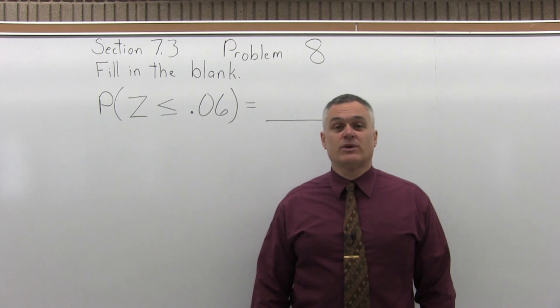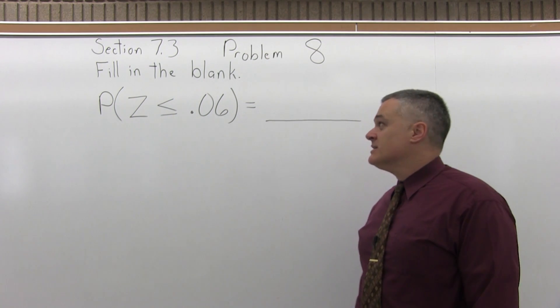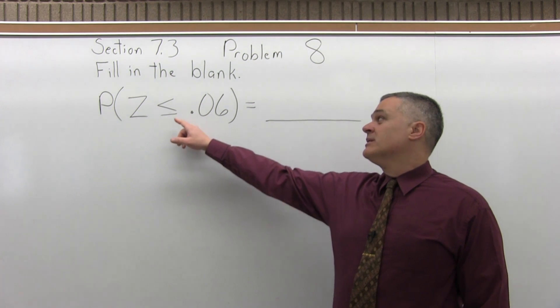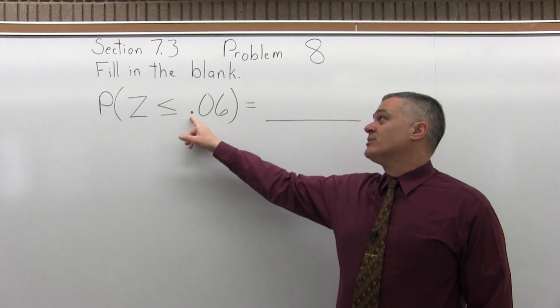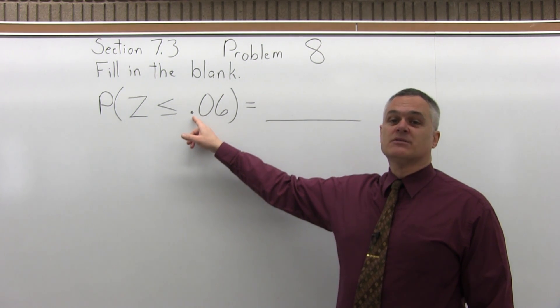This is Section 7.3, Problem 8. It says fill in the blank, find the probability that Z is less than or equal to 0.06.